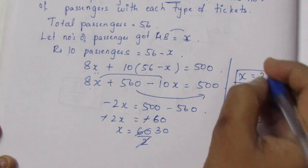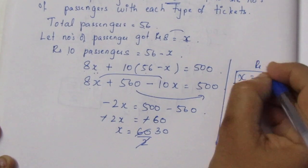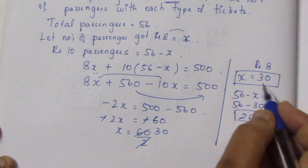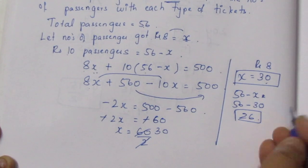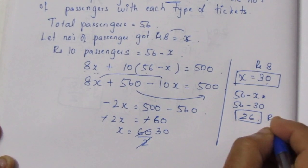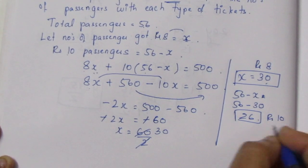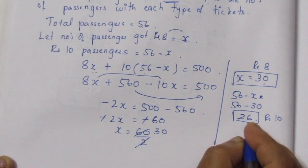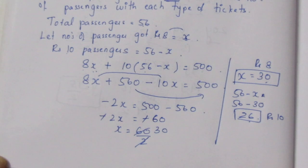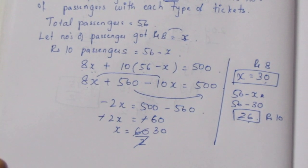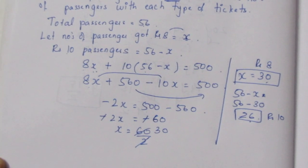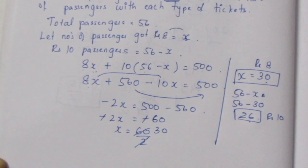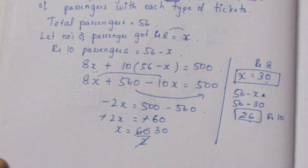So Rs.8 ticket passengers: 30 in number. Rs.10 ticket passengers: 26 in number. That is the solution. Thank you.